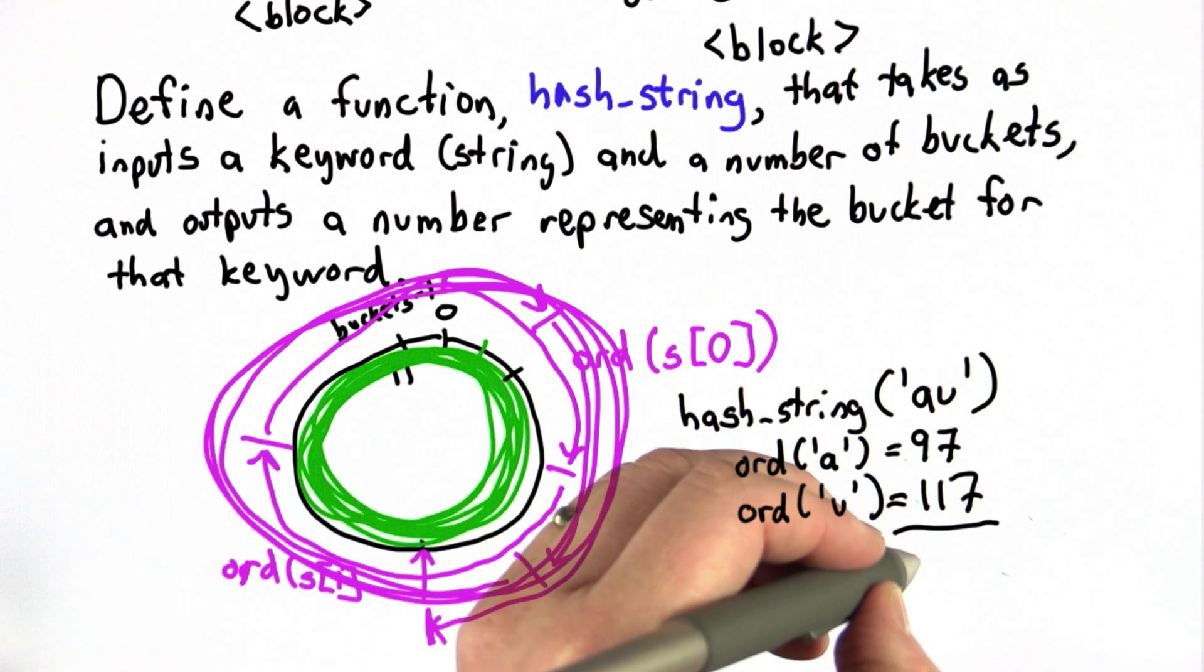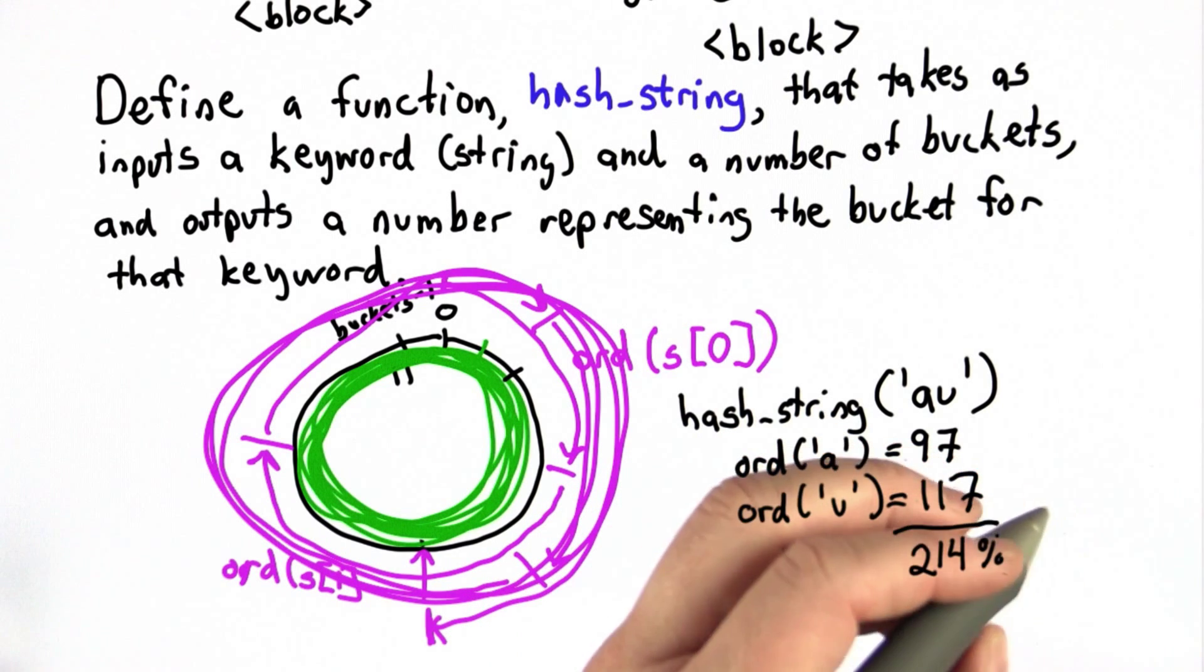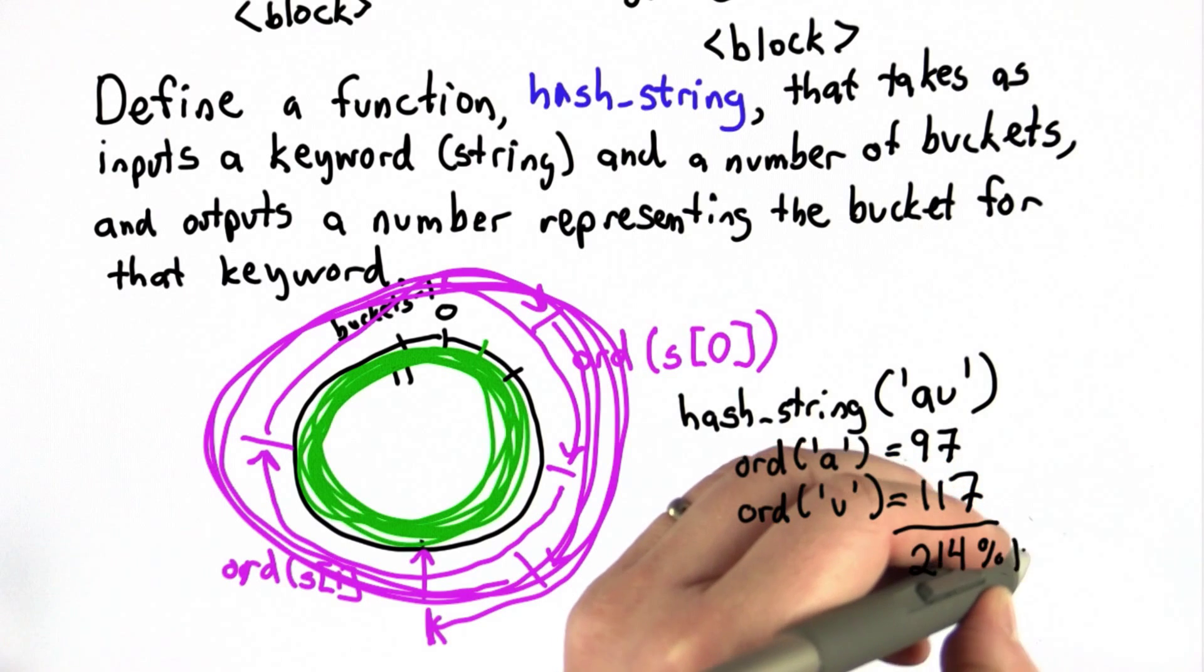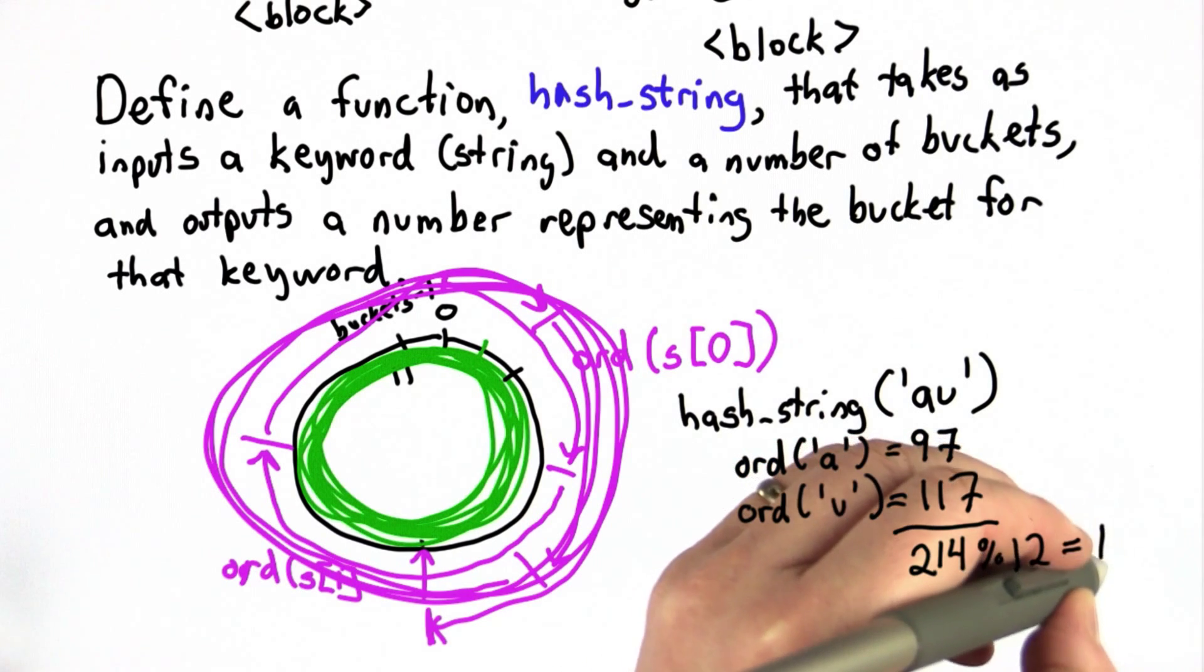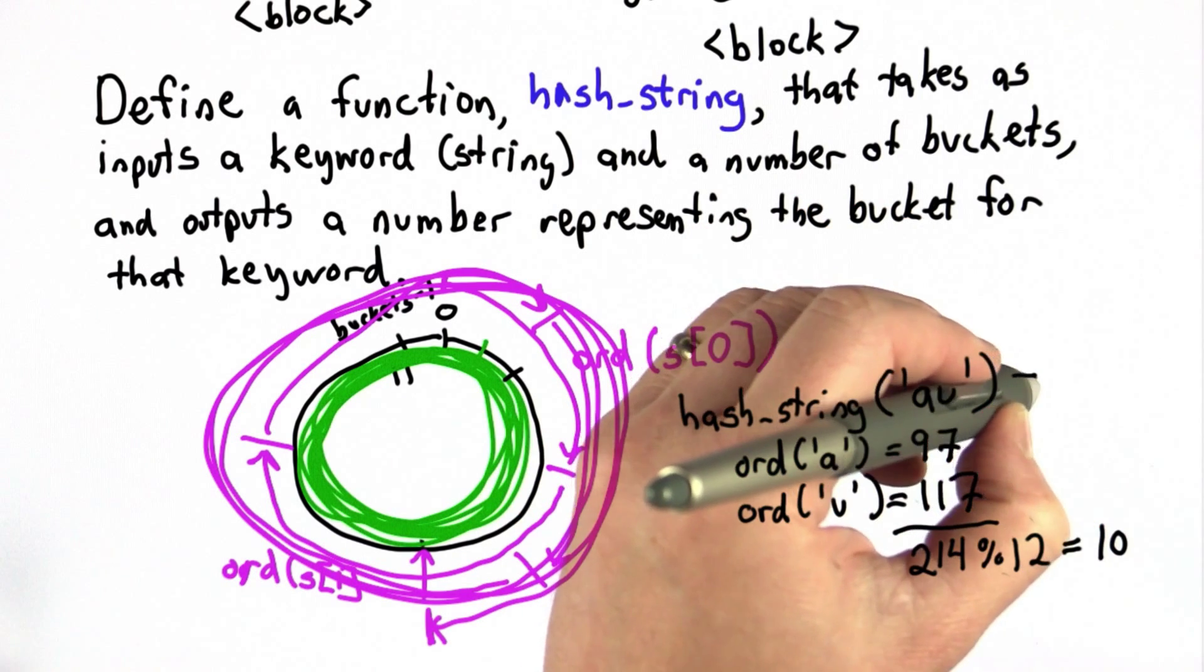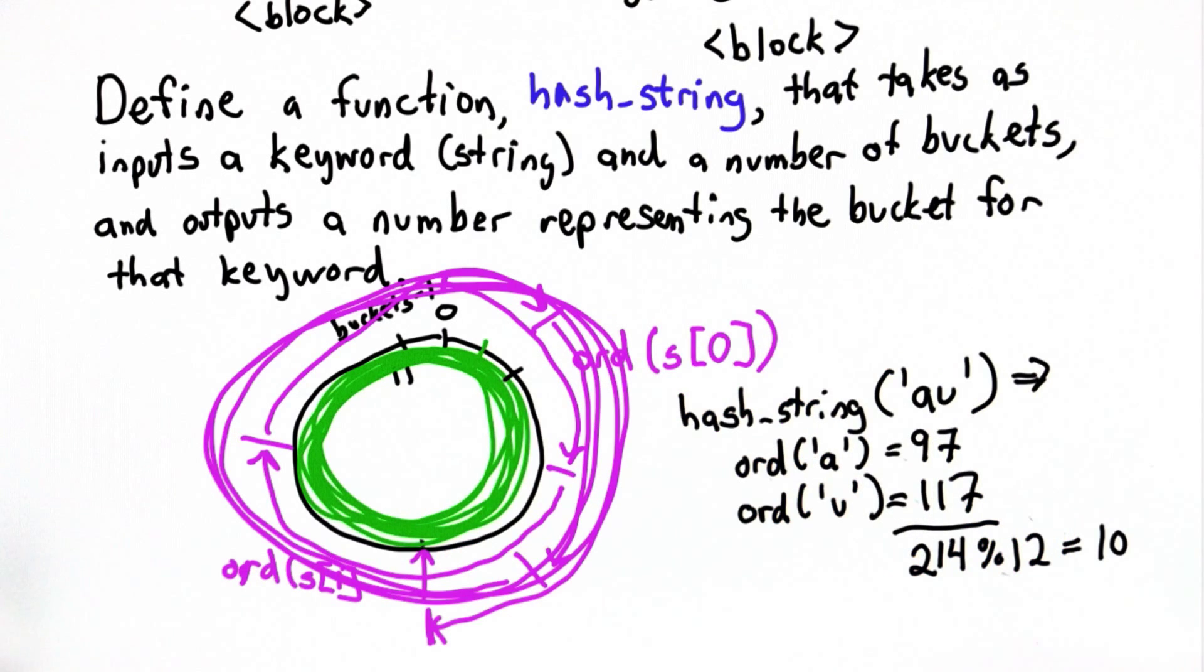When we add those two, we get 214. And modulo the number of buckets, which is 12 here, we should get 10. So that string with two symbols doesn't end up in position 1 where the A would end up. It ends up in bucket 10.